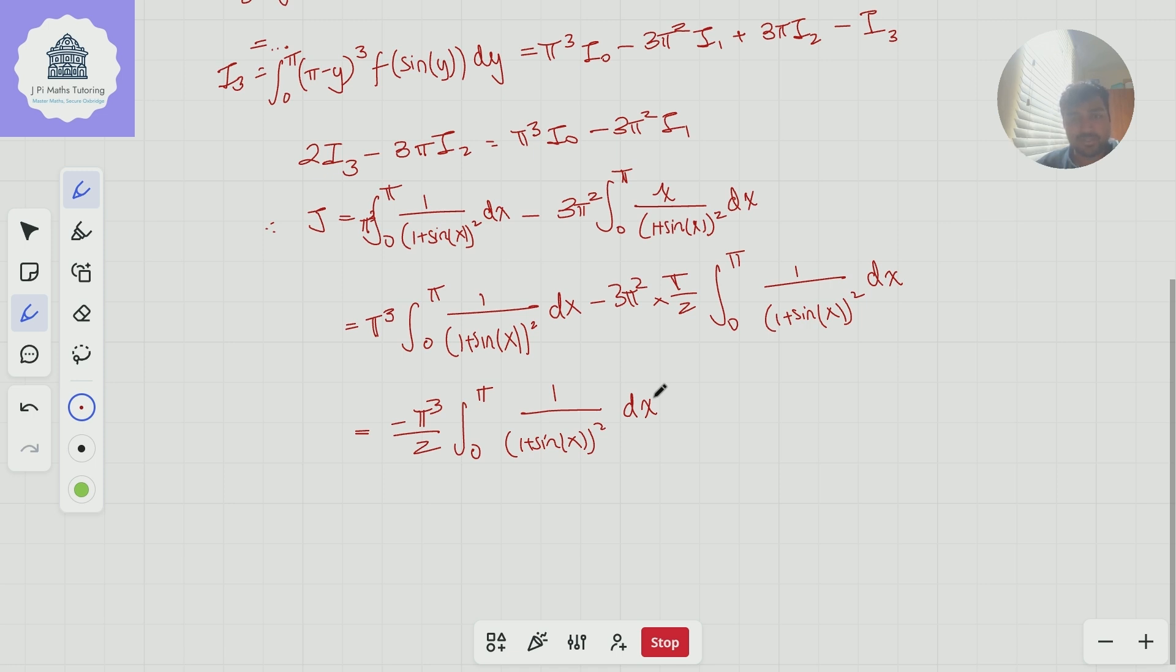Great, this is really useful. So this integral J, the thing we're trying to work out, is equal to minus π cubed over 2 times this thing here. Now how on earth do we evaluate this integral?